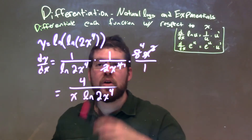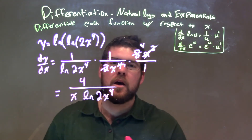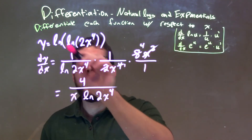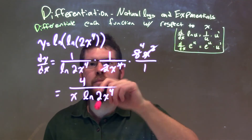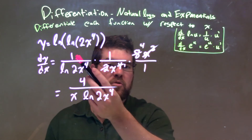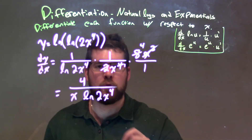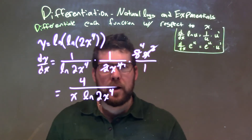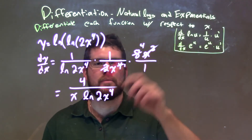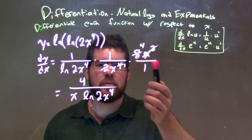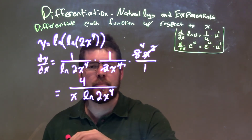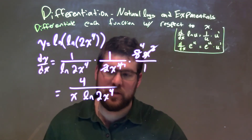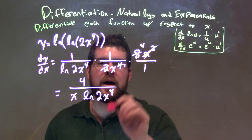Let's recap. We're given y equals the natural log of the natural log of 2x to the fourth power. We apply the chain rule twice, using our known derivative of natural log. We get 1 over the inside — natural log of 2x to the fourth — times the derivative of the inside. The derivative of that inner natural log gives 1 over 2x to the fourth, times the derivative of 2x to the fourth, which is 8x to the third by the power rule. Then we cancel: 2 and 8 reduce to 4, and x to the third over x to the fourth leaves just x. Rearranging, our final answer is 4 over x times the natural log of 2x to the fourth power.